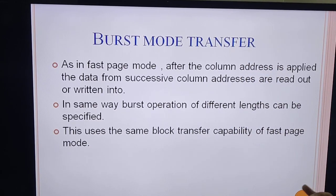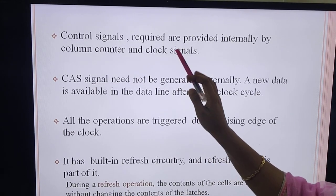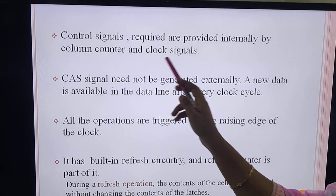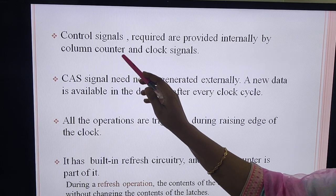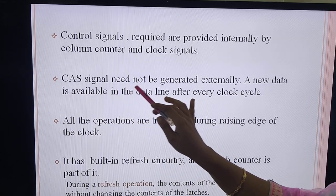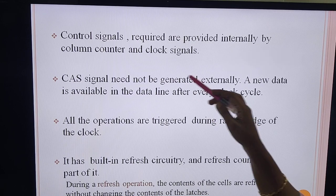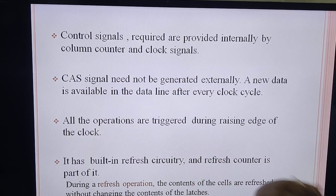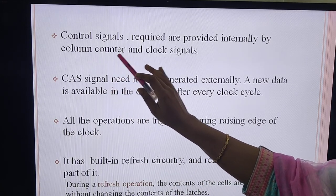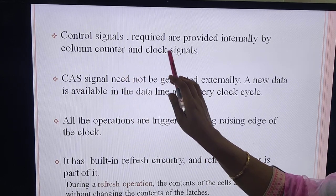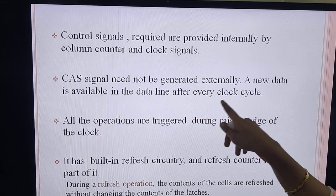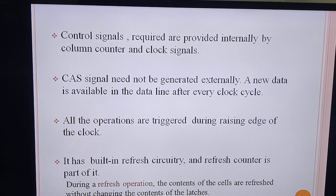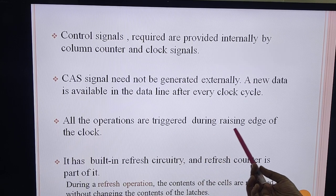Burst mode transfer is mainly used when you want to read successive columns in a particular row. The control signals required are provided internally by a column counter and a clock signal. The column counter provides information on how many columns are to be successively read, and this happens every clock cycle. The CAS signal need not be generated externally because the column counter information and the clock signal handle reading successive column information. A new data is available on the data line every clock cycle, and all these operations are triggered during the rising edge of the clock.